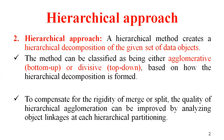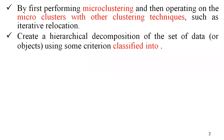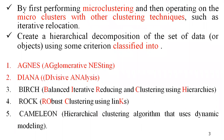The bottom-up approach is also called agglomerative, and the top-down approach is also called divisive, based on how the hierarchical decomposition is formed. This is one of the merge or split methods. The quality of hierarchical agglomeration can be improved by analyzing objects in a hierarchical partitioning. Different methods include agglomerative nesting, divisive analysis, balanced iterative reducing and clustering using hierarchies, robust clustering using links, and hierarchical clustering algorithm that uses dynamic modeling.